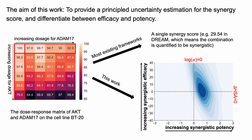For a typical dose-response matrix, what most existing frameworks do is provide a single synergy score for the combination — for example, 29.54 in DREAM, which is quite a high score showing the combination is synergistic. However, we do not know how uncertain the score is, nor whether the combination is synergistic due to improved efficacy, improved potency, or both. What SIMBA provides instead is not just the point estimate, but also the uncertainty around the synergy score, with synergy decoupled into synergistic efficacy and potency. This helps answer questions such as: do we need more data to reduce the uncertainty?